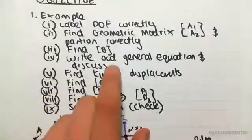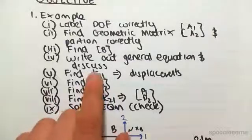Point 4 is now to write out the general equation and just have a little discussion about it.